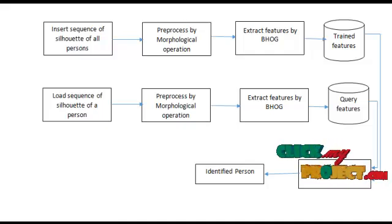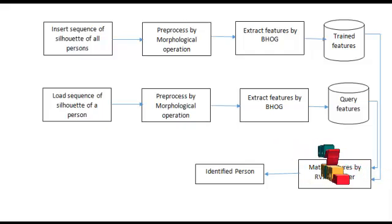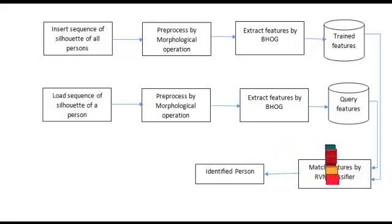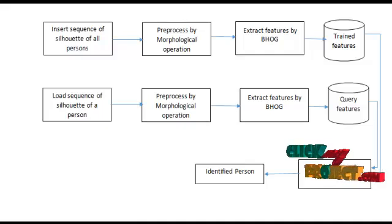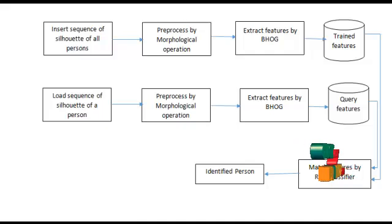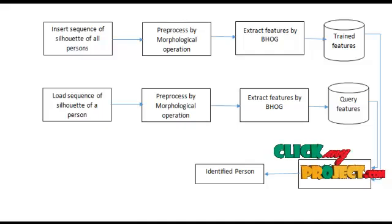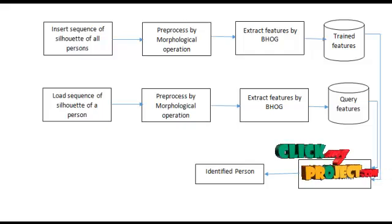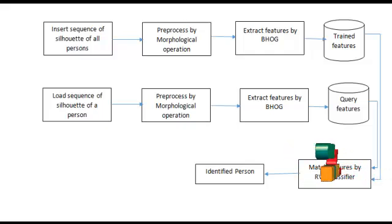Feature extraction is done using the concept of BHOG — Binary Histogram of Gradient. It extracts features like histogram gradient points of the silhouette images. The extraction process is done for all persons' silhouette images. After feature extraction, these features are stored as trained features, which are further used for the classification process.